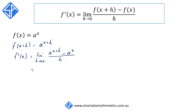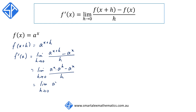Using the index law, we can rewrite this as a to the x times a to the h, minus a to the x, all divided by h. The next step is to factorize out the a to the x term, so we get a to the x times (a to the h minus 1) all over h.